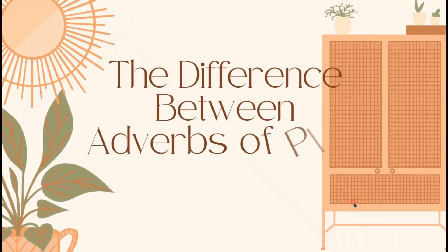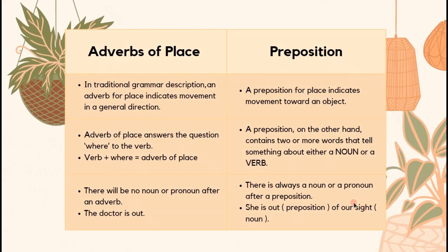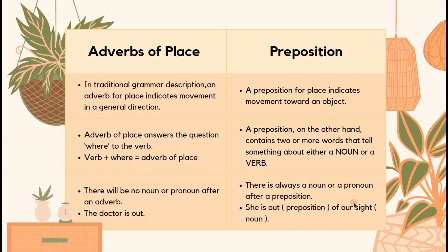Now let's look at the difference between adverbs of place and prepositions. For adverbs of place, in traditional grammar, an adverb of place indicates movement in a general direction. For prepositions, a preposition for place indicates movement towards an object. An adverb of place answers the question 'where' to the verb — verb plus 'where' equals adverb of place. A preposition contains two or more words that tell something about either a noun or a verb. Lastly, there will be no noun or pronoun after an adverb of place — for example, 'the doctor is out.' For prepositions, there is always a noun or pronoun after the preposition — for example, 'she is out of our sight,' where 'sight' is our noun.